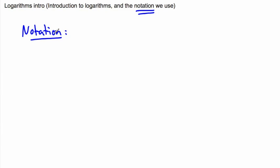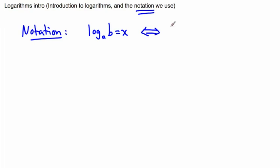So in general, the notation goes: log with a little subscript 'a' here, then b equals x. That's normally how we write it. And that is actually the same thing as saying a to the power of x equals b. These are actually equivalent statements.